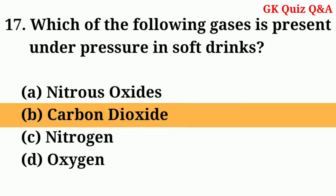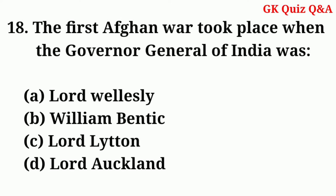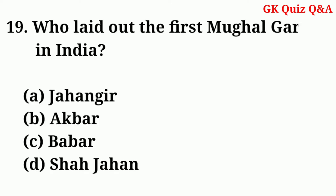Answer: B — Carbon dioxide. The first Afghan War took place when the Governor General of India was — Answer: D — Lord Auckland. Who laid out the first Mughal garden in India?